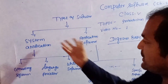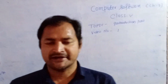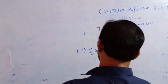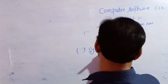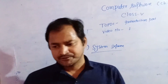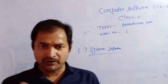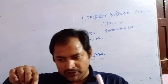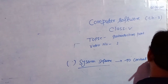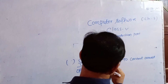I have not discussed what application software or system software is in detail, because this is only the introduction part. System software is required to control the overall operation of a computer system.